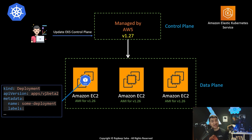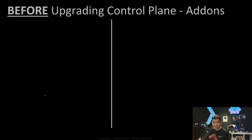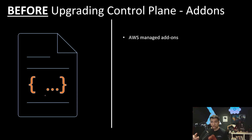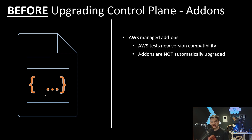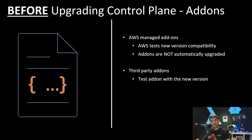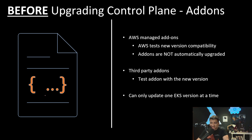Beyond applications, there are other things running on your Kubernetes cluster — add-ons. Add-ons also run as pods on your EC2 instances, so before upgrading you need to check them. The good news is that if an add-on is AWS-managed, AWS will release a new add-on version you can simply take and upgrade to. However, add-ons are not automatically upgraded — you have to explicitly tell EKS to update them. For third-party add-ons, you need to test with the new version or contact their support to verify compatibility.